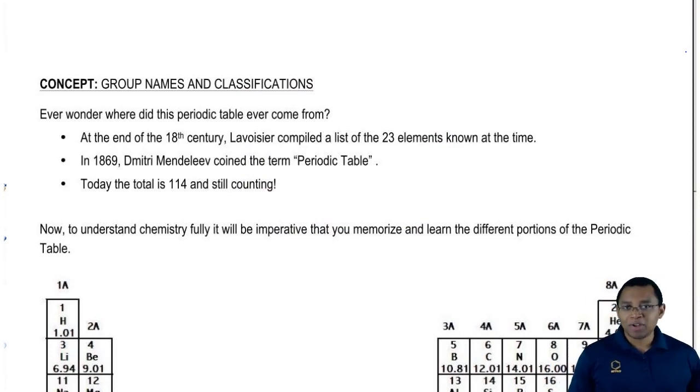Ever wonder where the periodic table came from? We can thank the French nobleman Lavoisier. He's known as the father of modern chemistry. He helped to name oxygen and hydrogen and successfully predicted the element silicon. He was great at studying patterns in chemistry and biology, and because of him we were able to construct a list of the first 23 elements that would eventually lead to the periodic table.